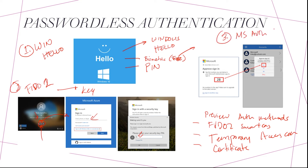The third method is the Microsoft Authenticator app. An important note: don't confuse MFA with the Microsoft Authenticator app for passwordless authentication. With passwordless authentication, it's set up using number matching — where you match the number displayed on the Microsoft login screen to the number shown in your Authenticator app. With MFA, you enter your password and then approve the authentication request separately.